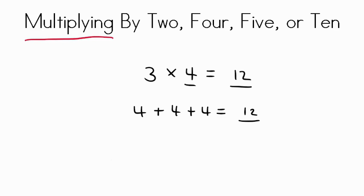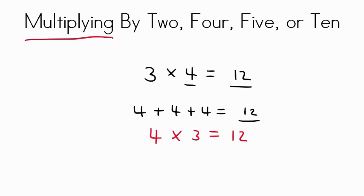Now the truly neat part about multiplication is if we know that 3 times 4 is 12, then the opposite is also true. So 4 times 3 will also equal 12. Any time that you're multiplying, you can always reverse the numbers and you will still get the same answer.